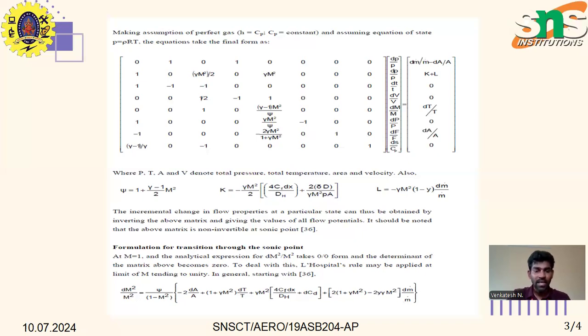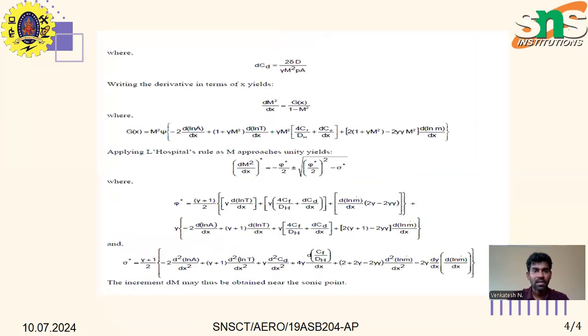The formulation for transition through the sonic point at Mach number equal to one: the analytical expression for dM²/dM² takes zero by zero form. The determinant of the matrix becomes zero. To deal with this, L'Hôpital's rule may be applied to find the limit of the Mach number value.